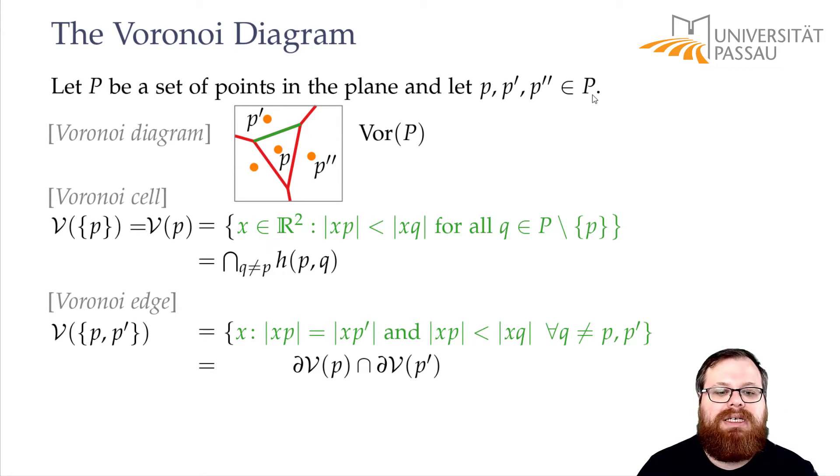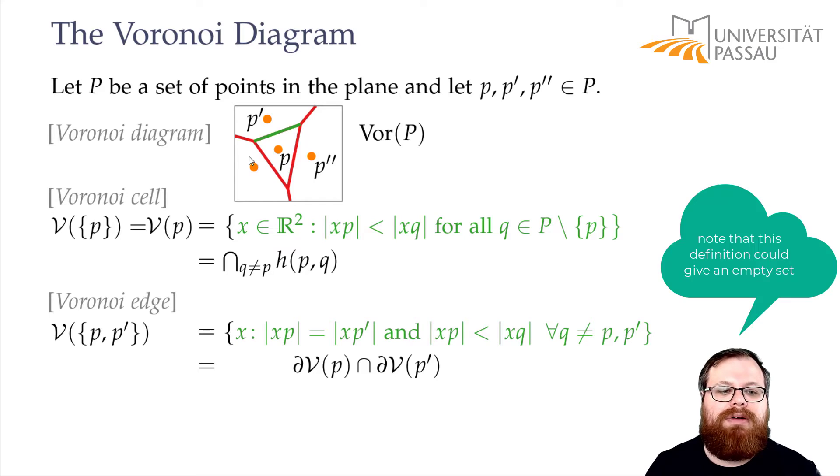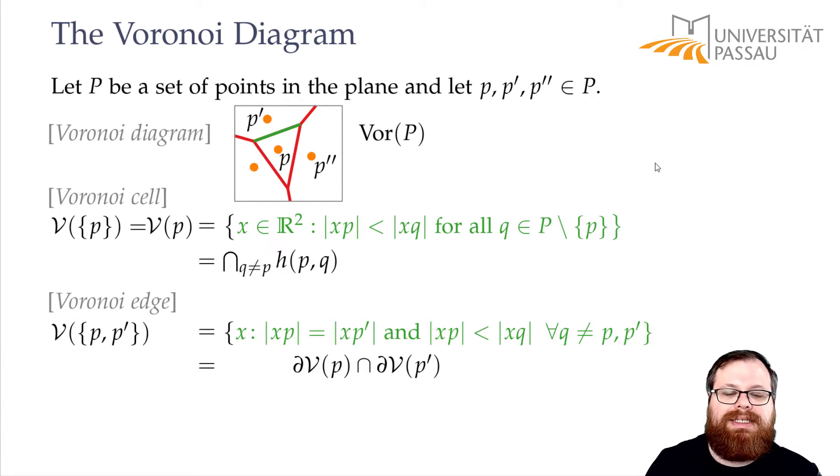We can find that by intersecting the boundaries of the Voronoi cells. We take the Voronoi cell of P and look at what is at the boundary. The Voronoi cell of P' - what is at the boundary. What do they share? That gives us the Voronoi edge. With one exception: we don't want the ends of the segment. We only want the relative interior of this intersection.